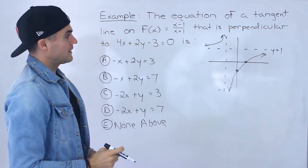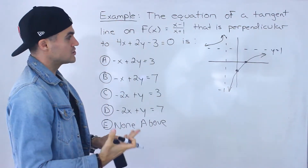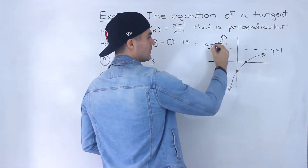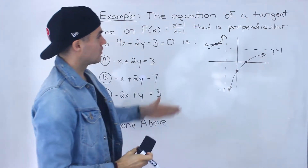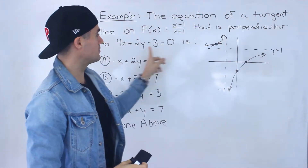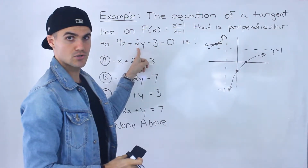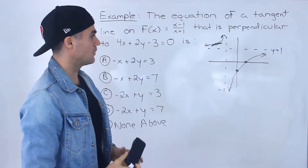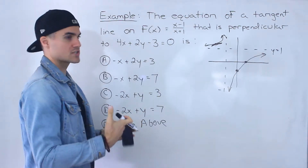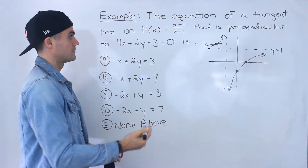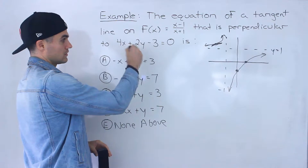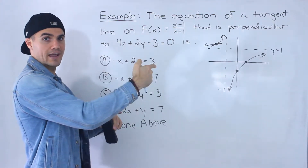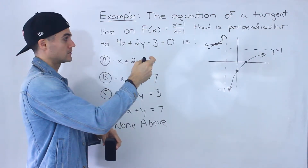What we have to find is the equation of a tangent line on this function — some kind of tangent perpendicular to the line 4x plus 2y minus 3. We can figure out first what the slope of the tangent is going to be. If it's perpendicular to this line, we can get the slope of that line and then take the negative reciprocal.